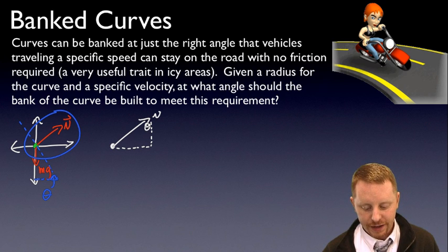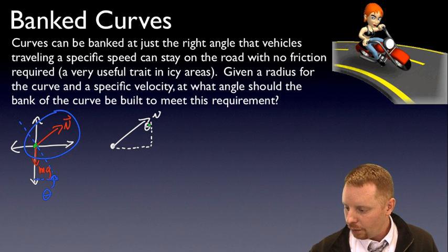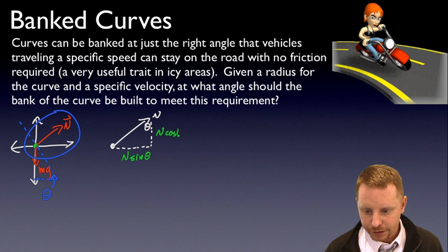So when I break that normal force into components, parallel and perpendicular to the axes, what I'm going to see is that down here I have N times the opposite side, so N sin theta. Here I have N cos theta.